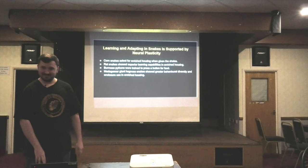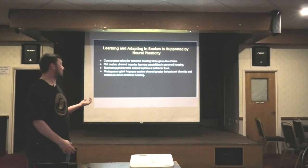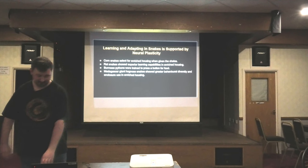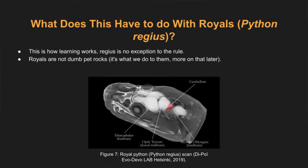The same basically happened with Madagascan giant hognosies — when put in a rich environment, their behavioural diversity increased and they expressed more behaviours because they could do more, with more neural pathways in relation to different experiences. So what does this mean for royals? What I've just laid out is the groundwork. If someone says royals are dumb and don't do much — well, that's how learning works, that's how the brain works. Royals are not the exception to the rule. They're not the dumb pet rocks people think they are. It's not them. It's what we're doing to them.